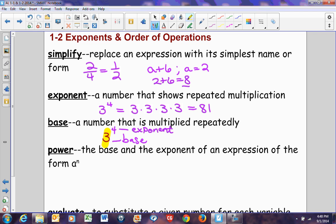The exponent is telling you how many times you are going to use 3 as a factor. The power is the base and the exponent of an expression in the form of a to the n. So 3 is my base, 4 is my exponent. But the entire thing is called a power.